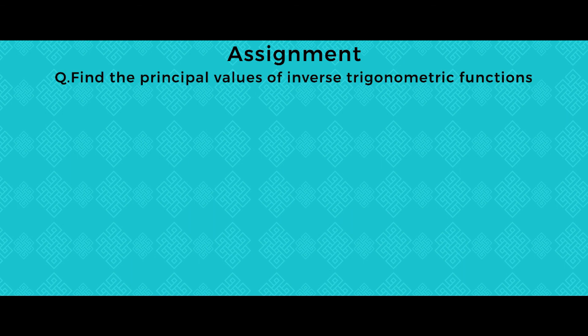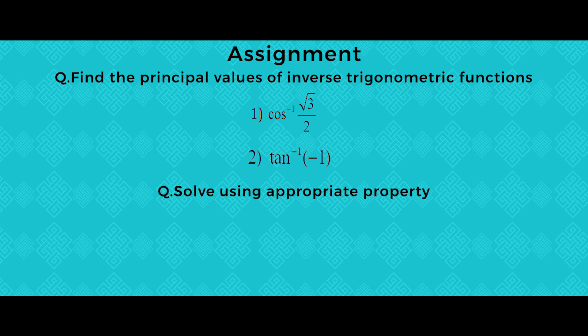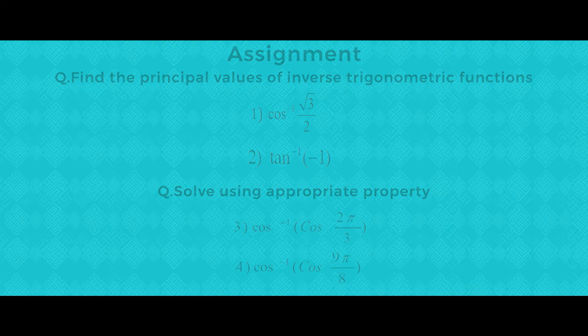Before I leave, I have some work for you. Question one: find the principal values of inverse trigonometric functions — first, cos inverse of √3/2; second, tan inverse of negative 1. Question two: solve using the appropriate property — cos inverse of cos(2π/3), and cos inverse of cos(9π/8). You can refer to the properties and try these at home. Thank you so much for attending my lesson. See you in the next lesson.